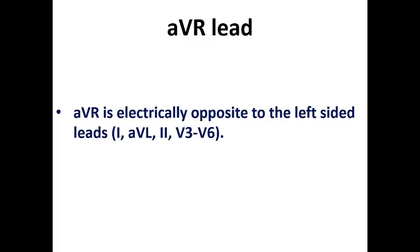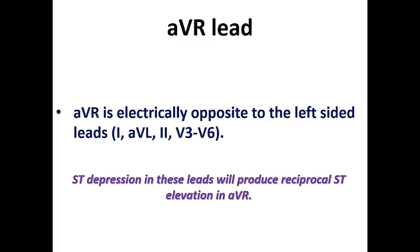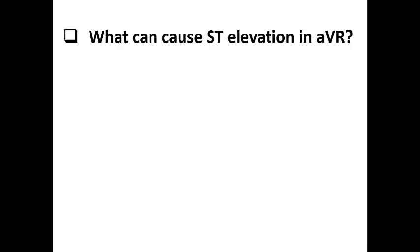We can conclude that AVR is electrically opposite to the left-sided leads: lead 1, AVL, V2, and the precordial leads from V3 to V6. Based on this, ST depression in these leads can produce reciprocal ST elevation in AVR. As we remember from the lecture on ECG in STEMI, ST elevation can always cause reciprocal ST depression and vice versa.